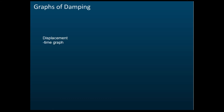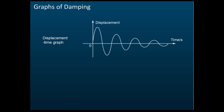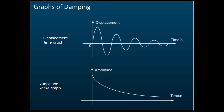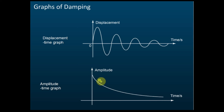The graph of damping is important because exams usually ask you to sketch it. There are two types: the displacement-time graph, which oscillates with decreasing amplitude, and the amplitude-time graph, which shows amplitude decreasing over time with no negative values. Make sure you don't confuse them — many students give the displacement-time graph when asked for the amplitude-time graph.